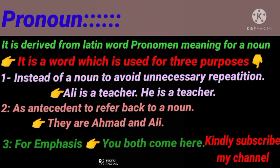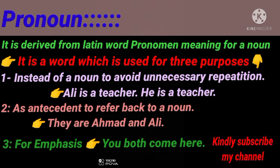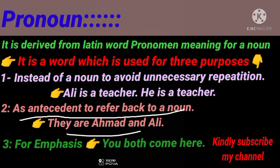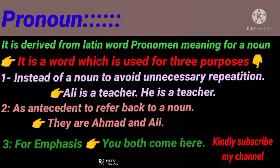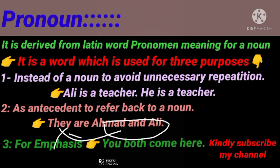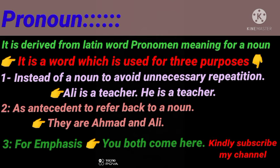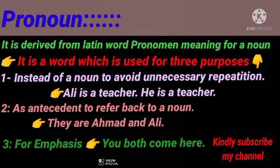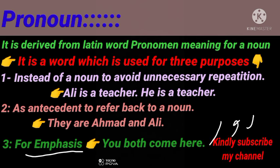Number secondly: it is antecedent to refer back to noun — یہ واپس اس اسم کو بتاتا ہے جس کا ذکر پہلے ہوا ہو۔ جیسے 'They are Ahmad and Ali' — یہاں 'they' کا مطلب Ahmad and Ali دونوں ہیں، واپس وہی مطلب ہوتا ہے۔ Number third: it is used for emphasis.